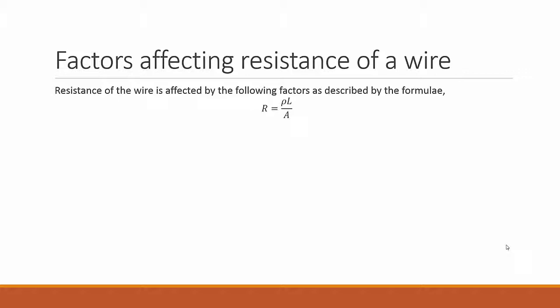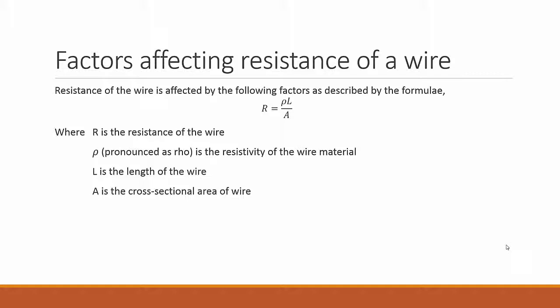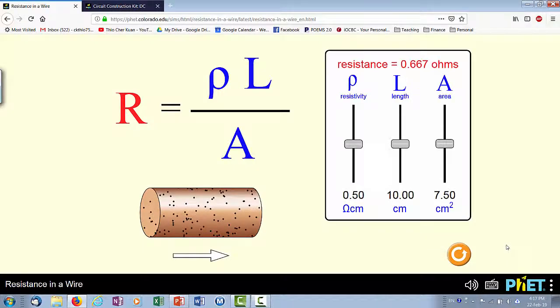The resistance of wire is affected by the following factors as described by the formula: R equals ρL over A, where R is the resistance of wire, ρ is the resistivity of the wire material, L is the length of the wire, and A is the cross-sectional area of the wire. Using the obstructiveness of a water pipe analogy, we can see how each factor affects the resistance of the wire.